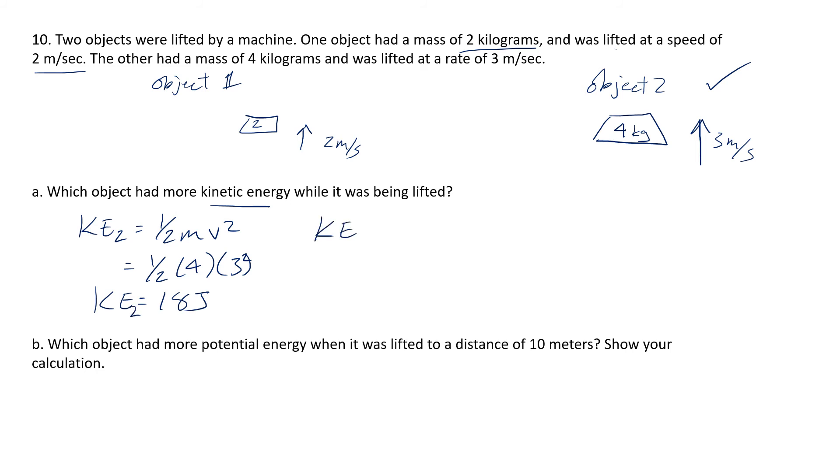Let's try it out for object one even though we know that object two is going to have way more kinetic energy. Object one is going to be one half mv squared also. But this time it's going to be equal to one half, the m this time is two kilograms. And then it's going to be two meters a second squared. So this is basically going to be four joules. Way less energy. Right? So of course object one wins. I mean object two wins. Good. Object two.